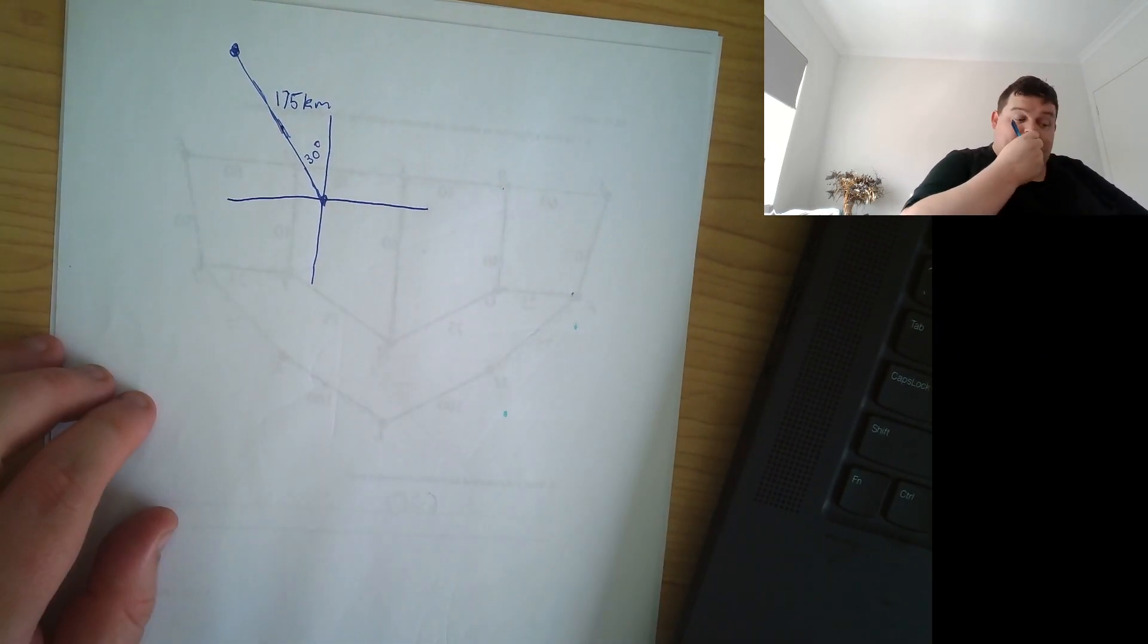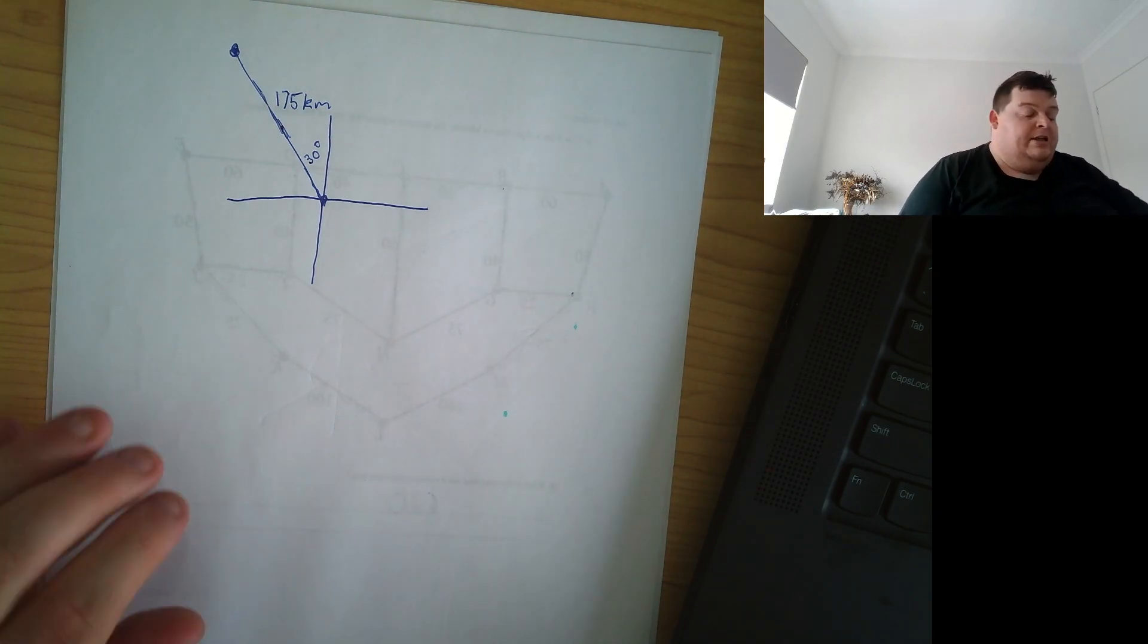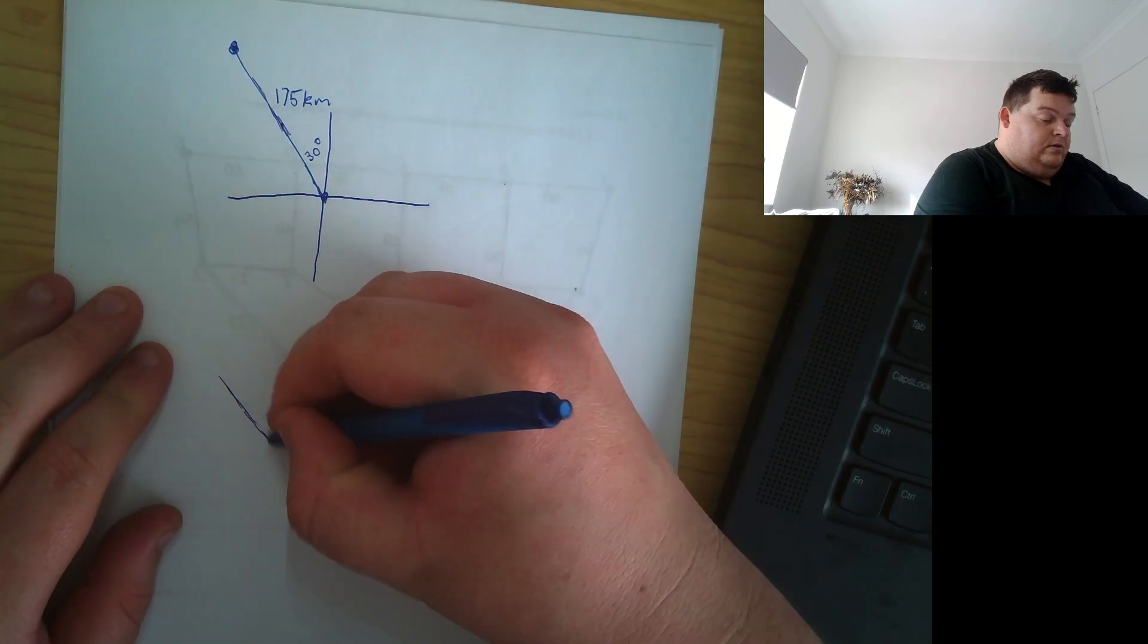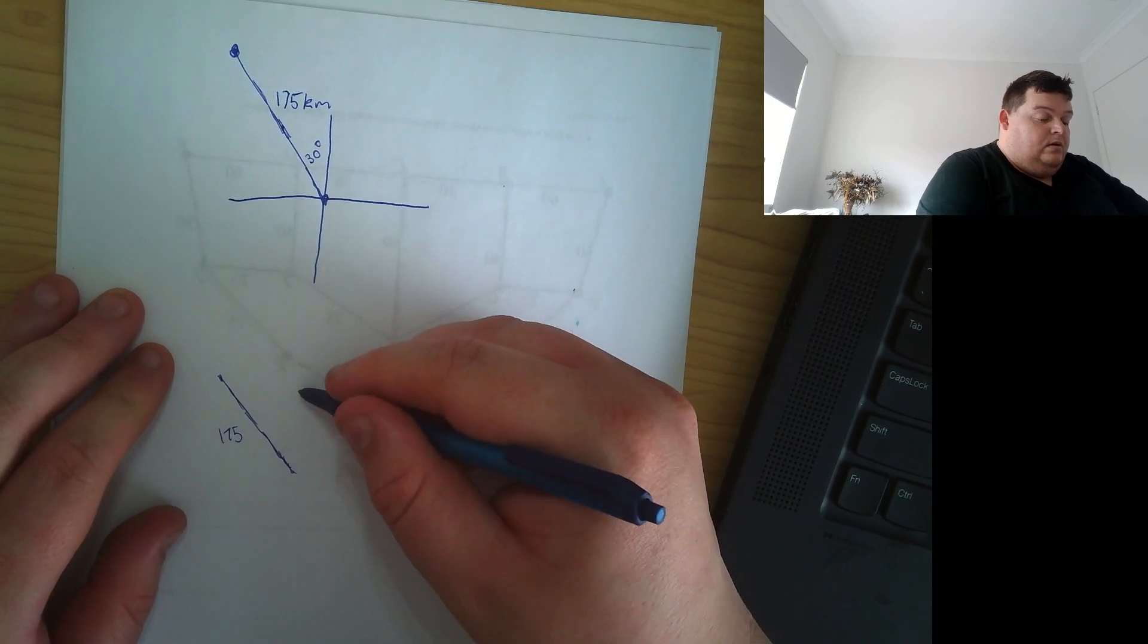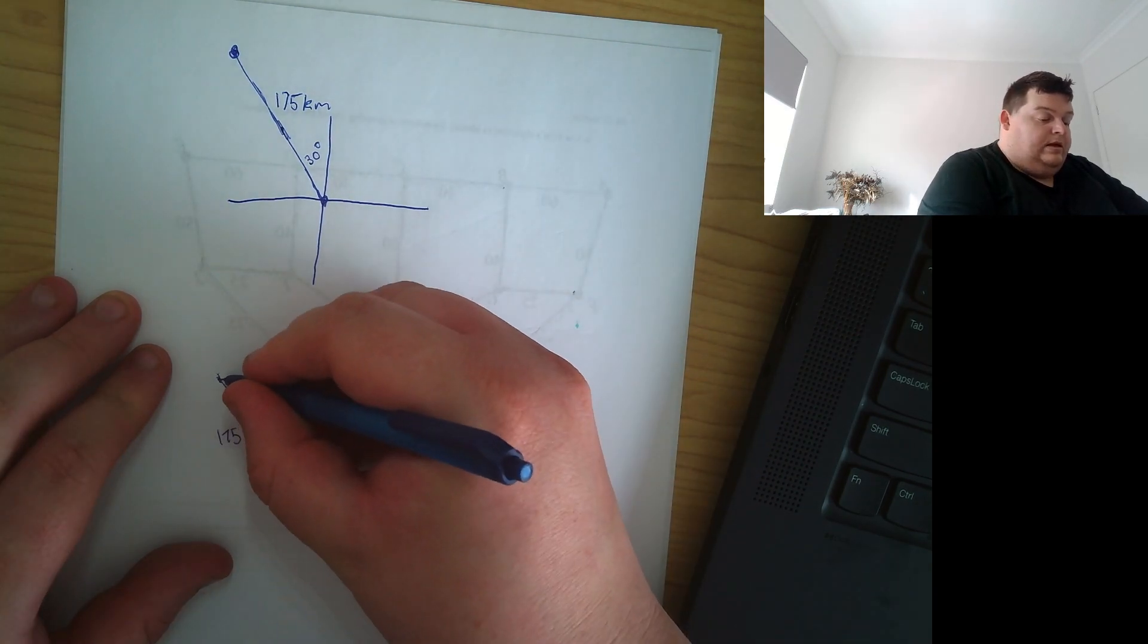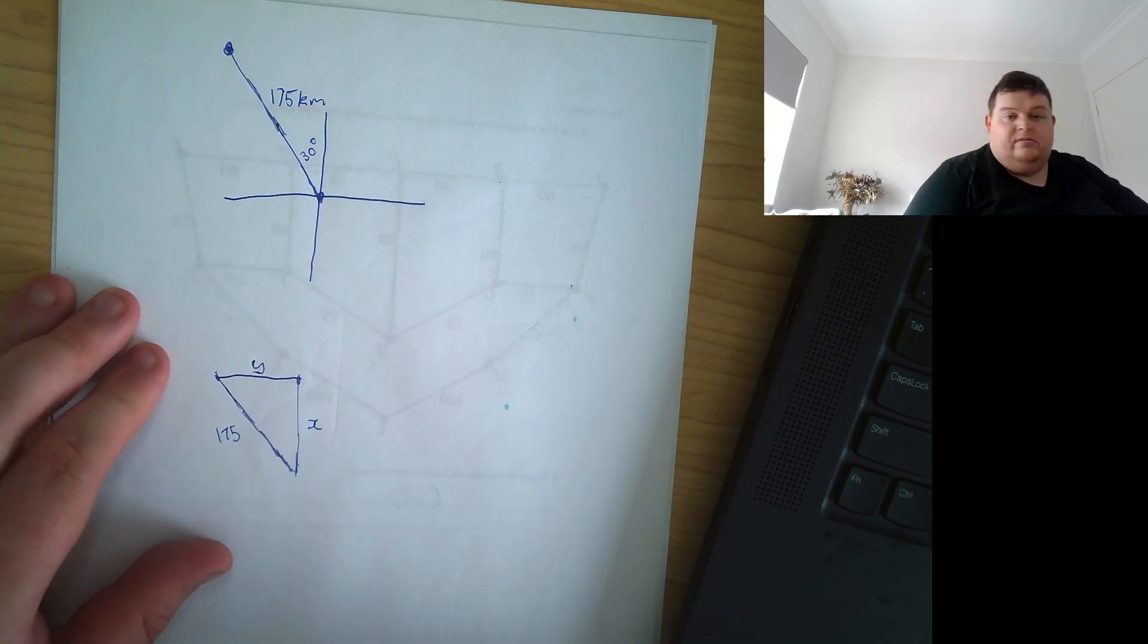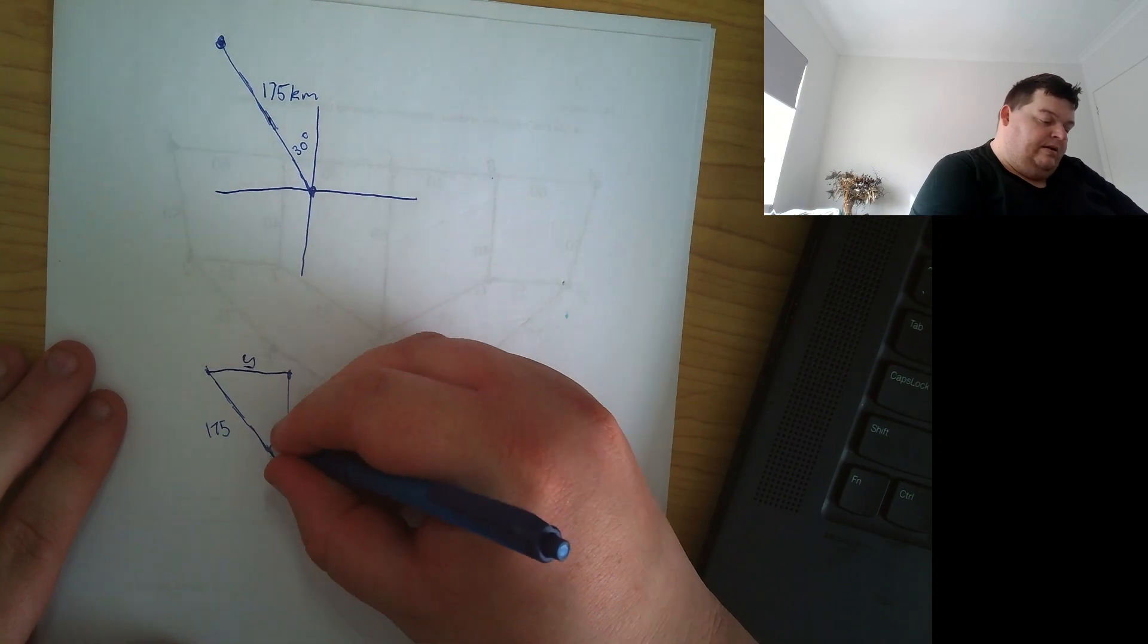Now, depending on the way that you like to work it out, you might be able to do that. For me, I'm always going to redraw this triangle. Alright. So this is 175. I know that that's due north and that's something and that's due west and that's something else. Alright. And they're the two values that they want us to find. We have the value in here.